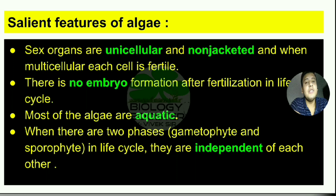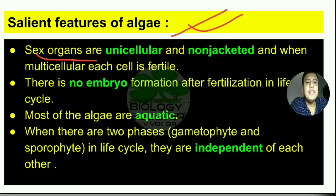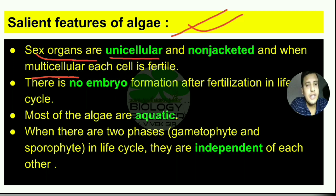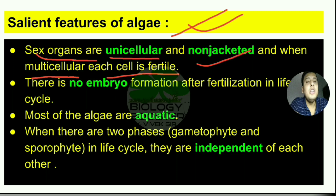Let's look at some more interesting features of algae. Regarding sex organs, algae have both types: unicellular and multicellular. When the sex organ is unicellular, it is non-jacketed. When they have multicellular sex organs, each cell is fertile — meaning each cell is able to germinate and grow into a new plant.